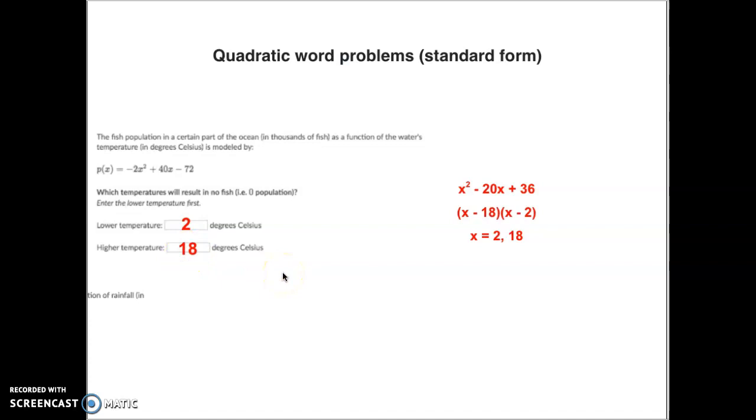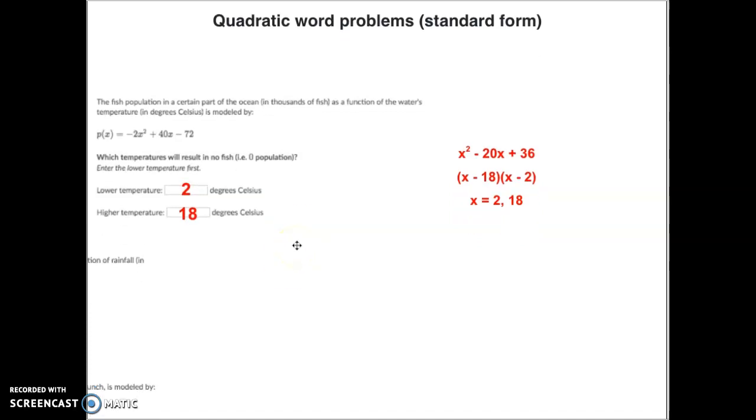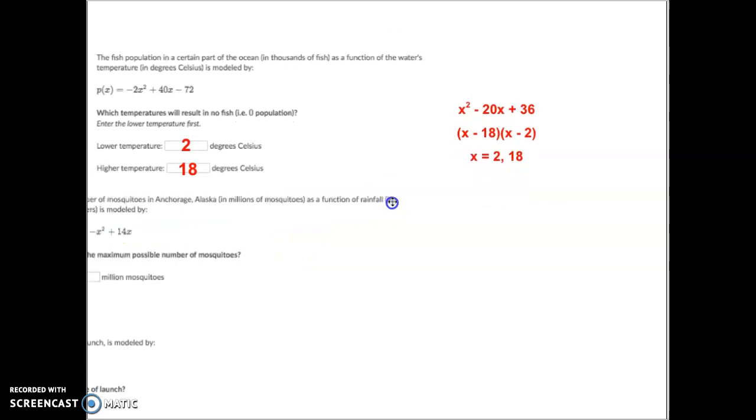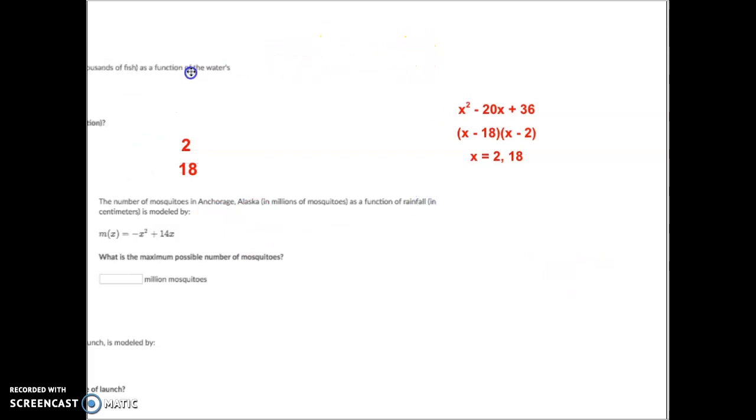Hopefully that makes sense. That's one way they'll ask a question - basically your x-intercepts, your lowest, your highest, or something like that. All right, let's go to the next one. On this one, let's move this one out of the way so we keep focused. The number of mosquitoes in Anchorage, Alaska in millions is a function of the rainfall. What is the maximum number of mosquitoes? If we want to know the maximum number of mosquitoes, they're actually looking for the highest point, the point where you get the very most. You should know on a parabola the highest point is your vertex.